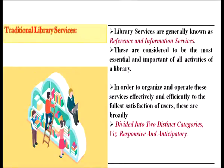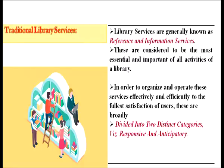The objective of the module is to explain the role of traditional library services. It identifies the categories of traditional services — responsive and anticipatory — lists out various responsive and anticipatory services, describes the need and functions of responsive and anticipatory services in libraries, and also provides an overview with examples of responsive and anticipatory services. Library services are generally known as reference and information services. They are broadly divided into two distinct categories: responsive and anticipatory.